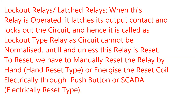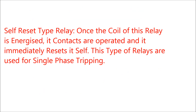This type of relay is mainly used for 3-pole circuit breaker tripping. Type 2: Self-reset type relay. Once the coil of the relay is energized, its contacts are operated and it immediately resets itself. This type of relay is mainly used for single phase tripping, mainly for 220 kV systems or beyond 220 kV voltage circuit breakers where single phase tripping is of prime importance for transient fault clearance, and auto-reclosing features are also embedded in this type of system.